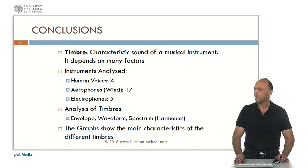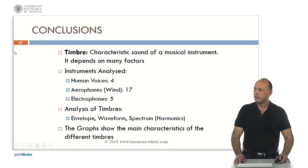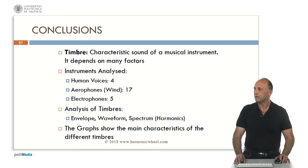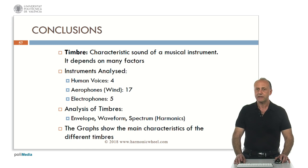As conclusions, the timbre is the characteristic sound of a musical instrument and depends on many factors. In this presentation we analyzed the human voices with four examples, aerophones that is wind instruments with seventeen examples, and electrophones with five examples. To analyze the timbres we considered the envelope, the waveform and the spectrum, that is the harmonics. These graphs show the main characteristics of the different timbres. You can find all the information on the web page harmonicwheel.com. Thank you very much for your attention.